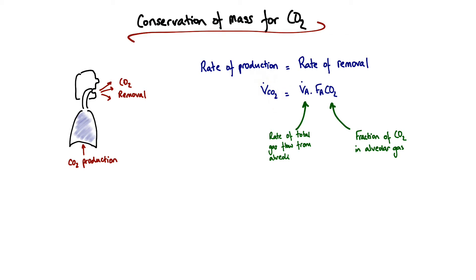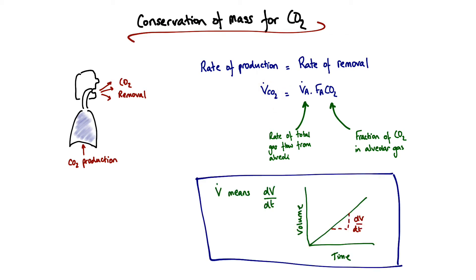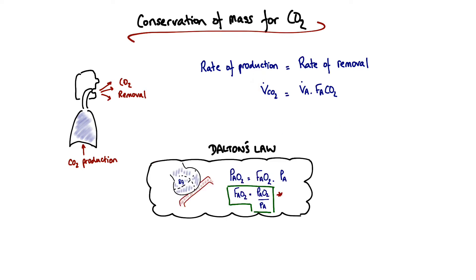To explain this V dot CO2 term: the dot means to differentiate with respect to time, and the V is volume. So we're seeing what change in volume occurs over a given time period — that's the same as saying what's the flow rate. We then invoke Dalton's law again, making exactly the same argument we made for oxygen: the alveolar fraction of CO2 equals the partial pressure of CO2 within the alveoli divided by the total alveolar pressure. We substitute this term in accordingly.